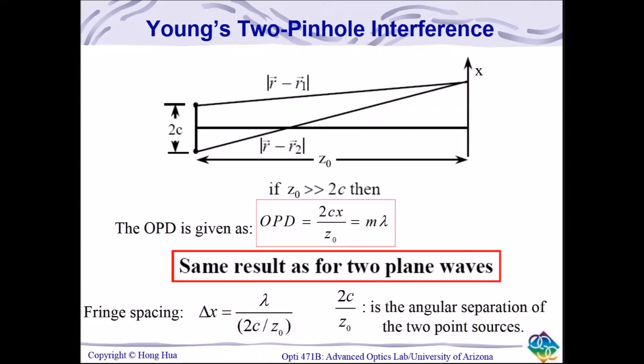When the incident wavefront is spherical, the reflected wavefronts appear as two separate virtual point sources with a similar fringe separation as in Young's two-pinhole interferometer experiment.